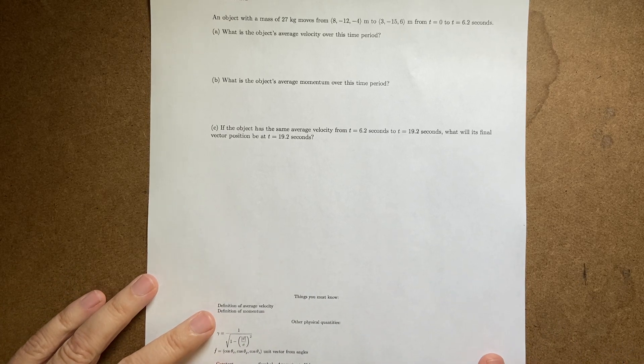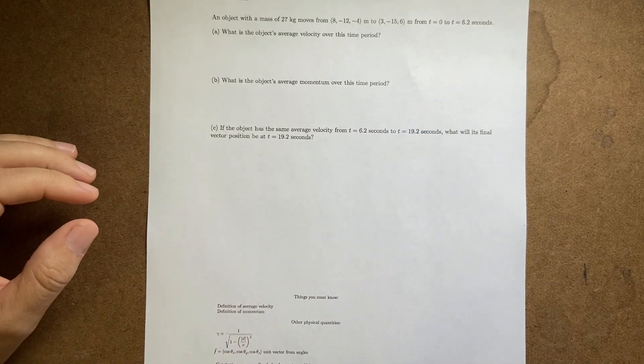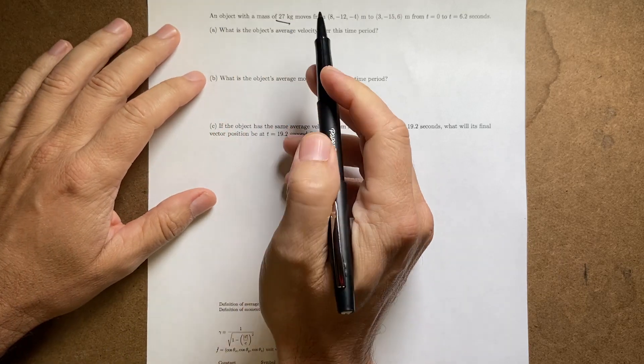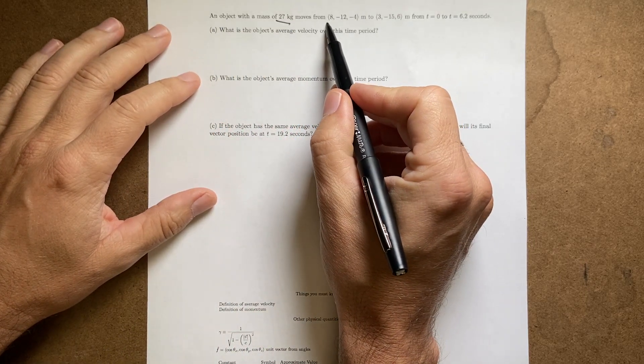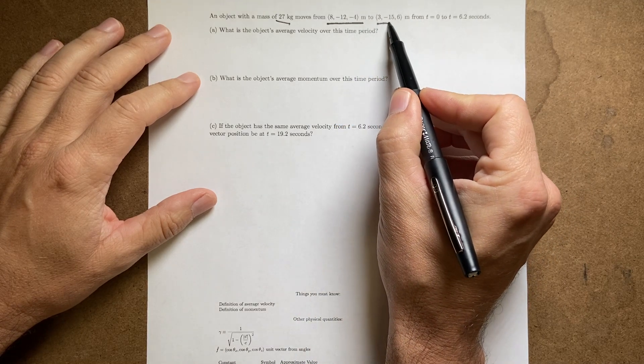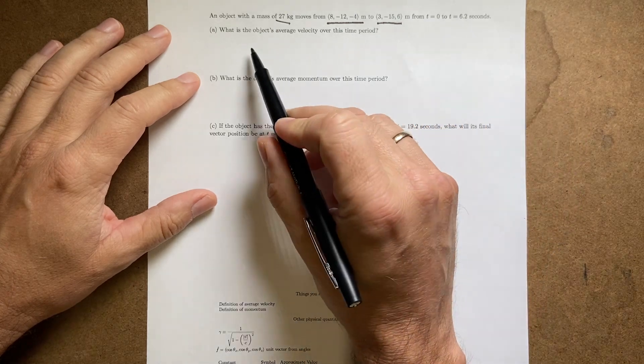Okay, so here is a practice problem on position and velocity. The print is a little bit small so I apologize for that, so let me read it to you. An object has a mass of 27 kilograms and it moves from a position of 8, negative 12, negative 4 meters to 3, negative 15, 6 meters from a time t equals 0 to 6.2 seconds.